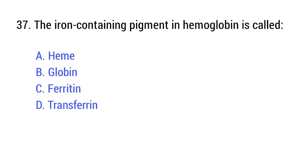Question number 37. The iron-containing pigment in hemoglobin is called — the right answer is option A: Heme.